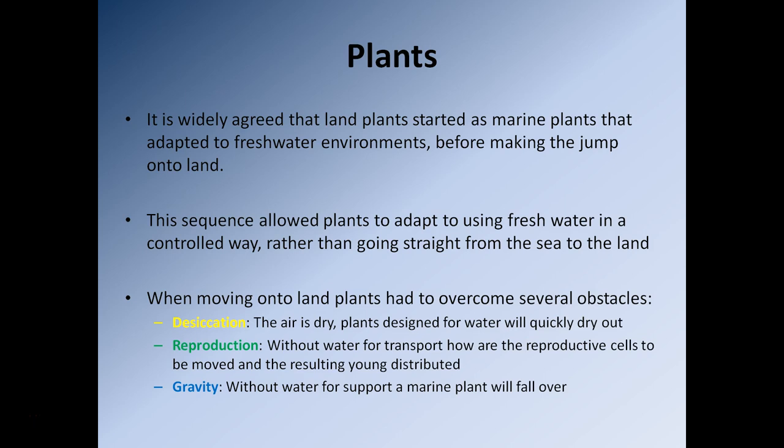From these brackish environments, once adapted, they could start moving into river environments where the water was 100% fresh water, and then from rivers and lakes onto the land. The alternative — plants going straight from oceans to land — would require a very large evolutionary jump. This stepping-stone process, from oceans to lagoons to rivers and lakes and then onto land, is by far the most logical pathway.